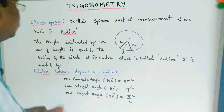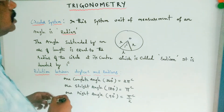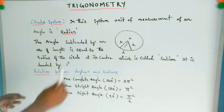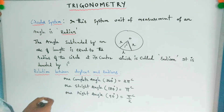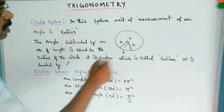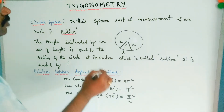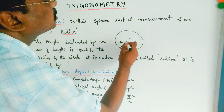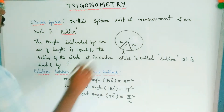Next, the circular system or radian system. In this system, the unit of measurement of an angle is radian. A radian is the angle subtended at the center of a circle by an arc whose length is equal to the radius of the circle. It is denoted by one radian.